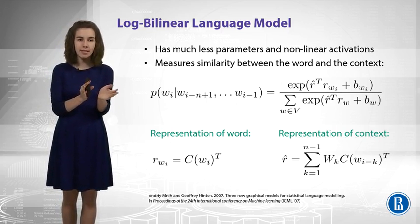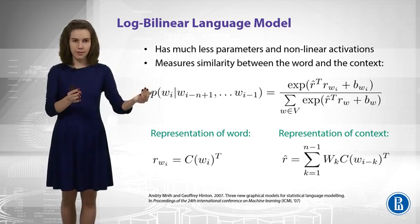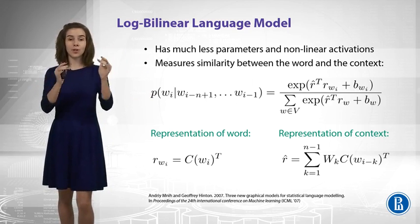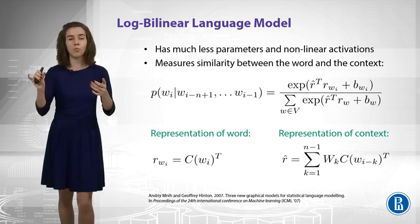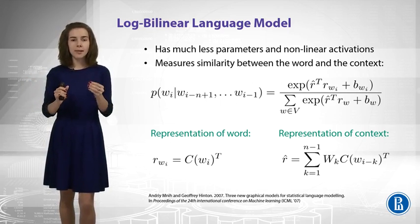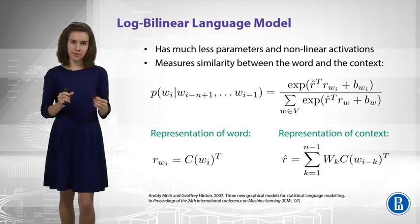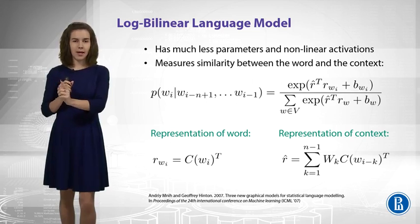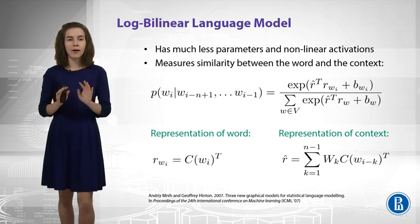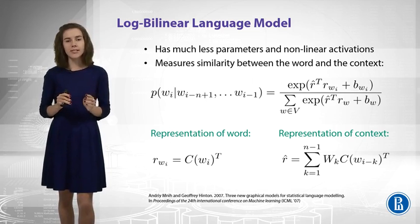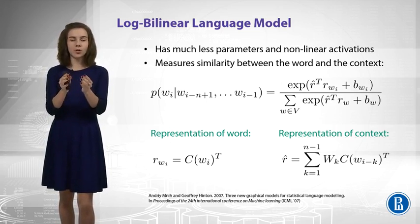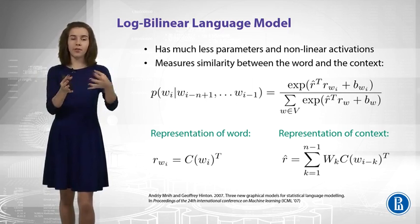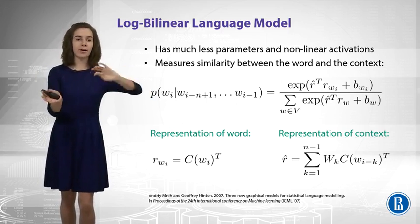Let's figure out what are they. So, the word representation, it's easy. It's just the row of your C matrix. What is the context representation? Well, you still get your rows of the C matrix to represent individual words in the context, but then you multiply them by WK matrices. And these matrices are different for different positions in the context. So, it's actually a nice model. It is not a bag-of-words model. It tries to capture somehow that words that just go before your target word can influence the probability in some other way than those words that are somewhere far away in the history.